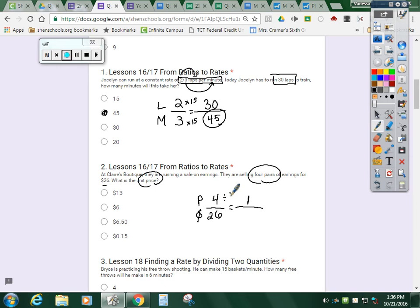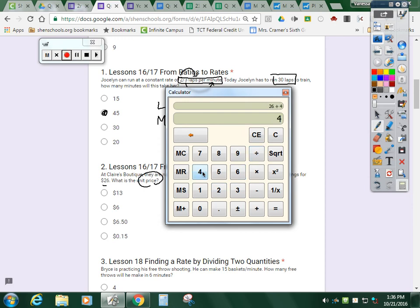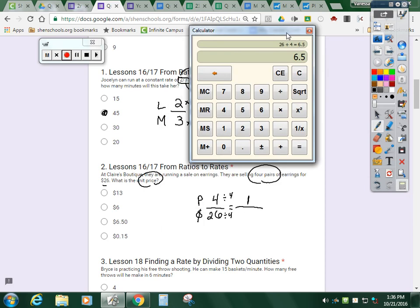So to scale that down I'm going to divide by four, divide by four. When you do 26 divided by four I get 6.5 and I'm going to add a zero because money comes two spots after the decimal so each pair of earrings is $6.50.